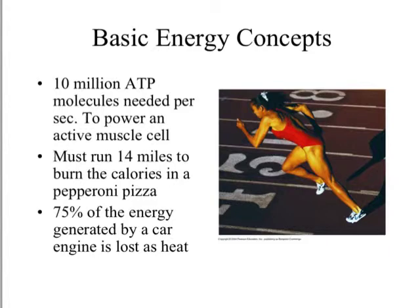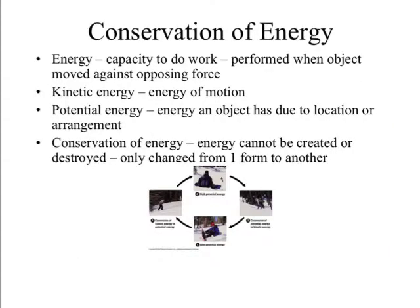So what is this thing called energy? Energy is the capacity to do work — it is performed when objects move against opposing forces. There are different kinds of energy. Kinetic energy is the energy of something in motion. Potential energy is energy stored in an object at a specific location or arrangement — like a book on the highest shelf, which has a lot of potential energy because if it falls, a lot of energy is released.